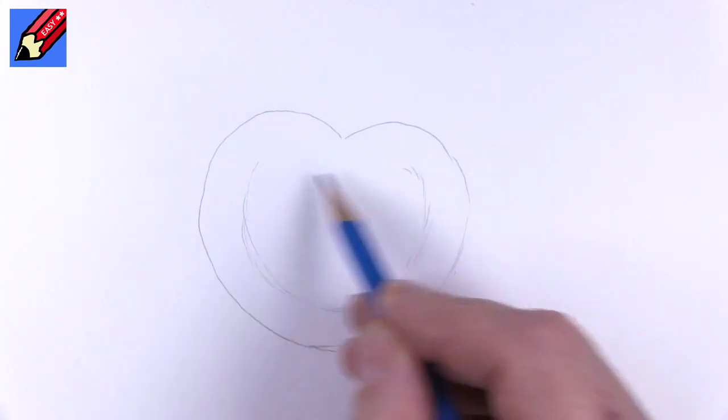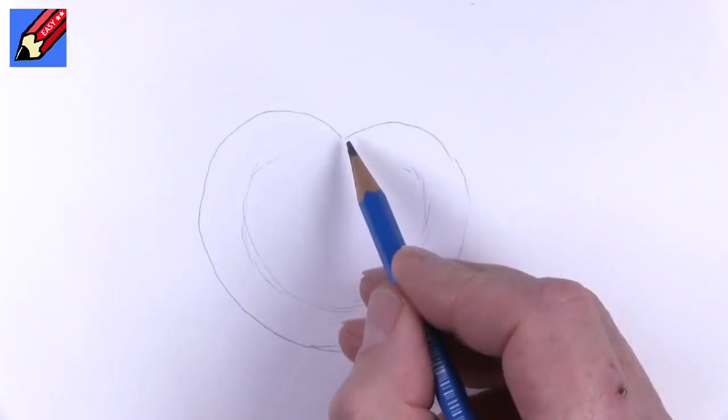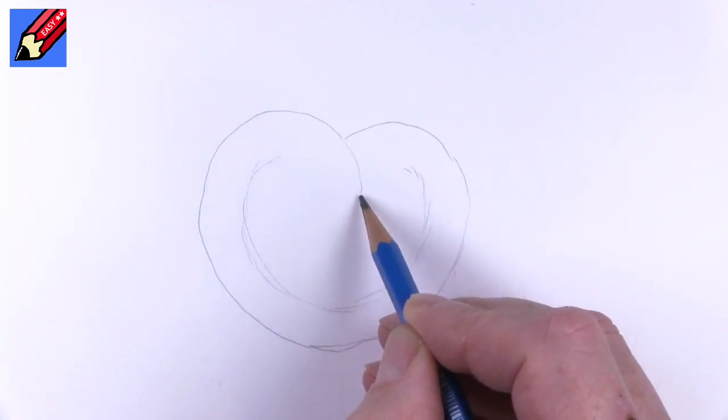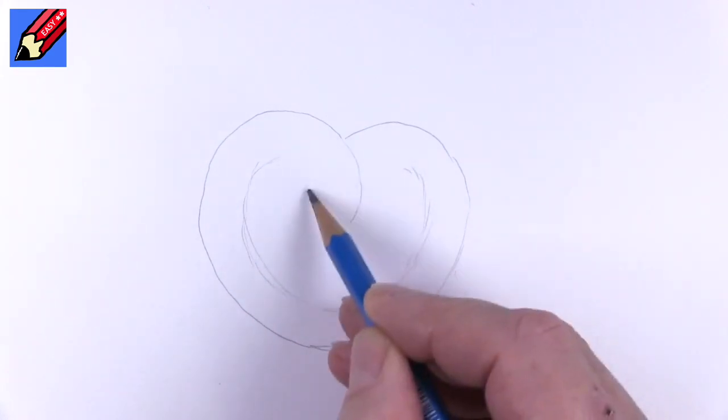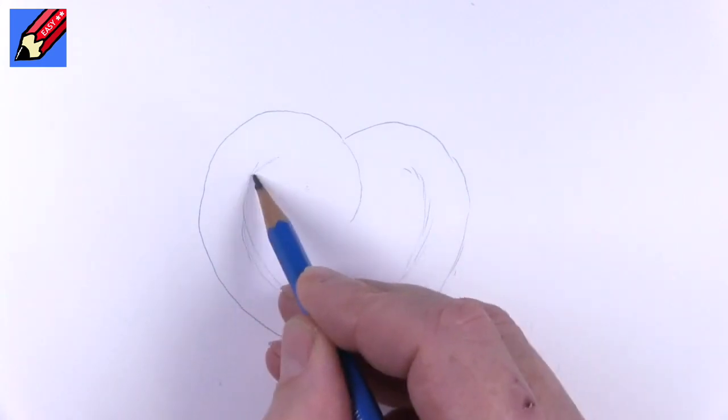And then this is the secret part. This bit where it comes around on the top, we want this to do almost like a quarter circle. If you think of a point there and there, it's kind of like a quarter circle.